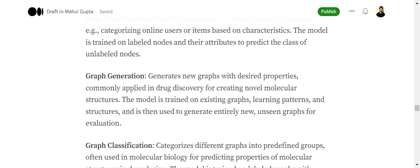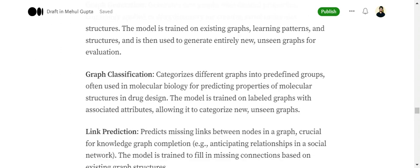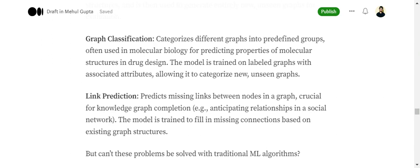Graph generation: In drug discovery, this becomes very important where you're trying to generate new graphs. Just like using LLMs you're generating new text, in graph generation you're generating new graphs. Graph classification: if you're a bio student, you must remember molecular diagrams. All these represent graphs. Graph classification is important for differentiating graphs into different classes and has a major impact in biology. The model is trained on labeled graphs with associated attributes, allowing it to categorize new unseen graphs.